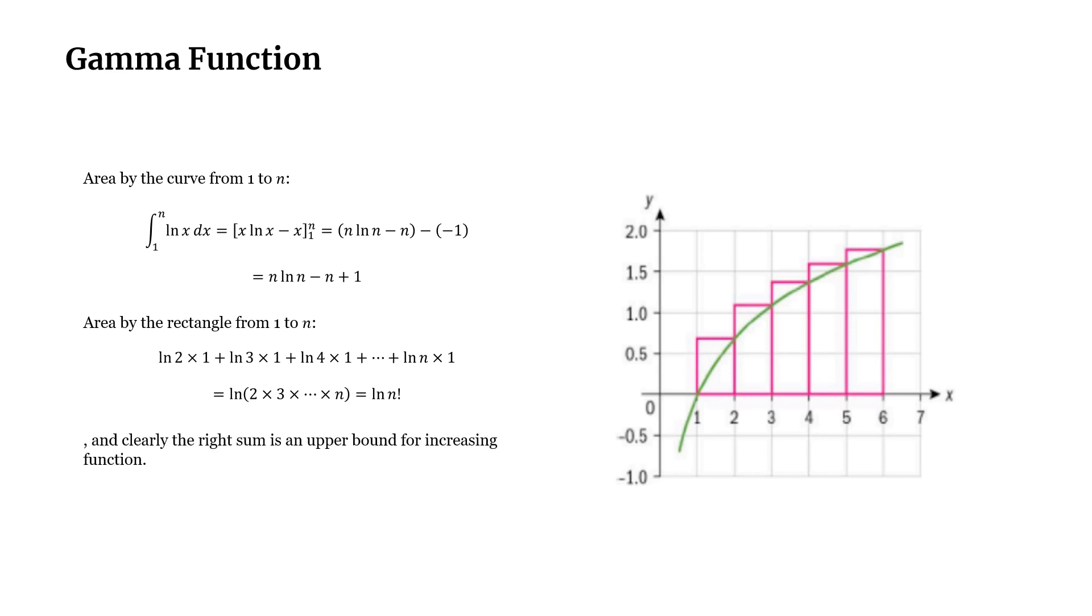And clearly, the right sum is upper bound for increasing, right. So hence, we can have this ln n factorial is bigger than n times ln n minus n plus 1, which you can simplify further as such. So yeah, that was the first part of the problem.